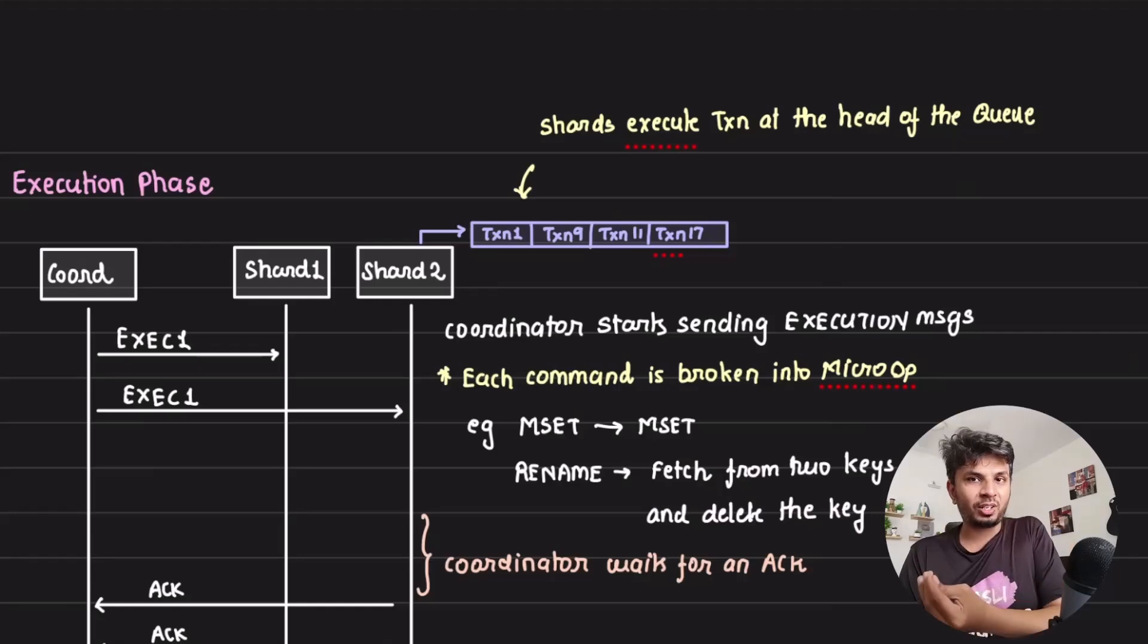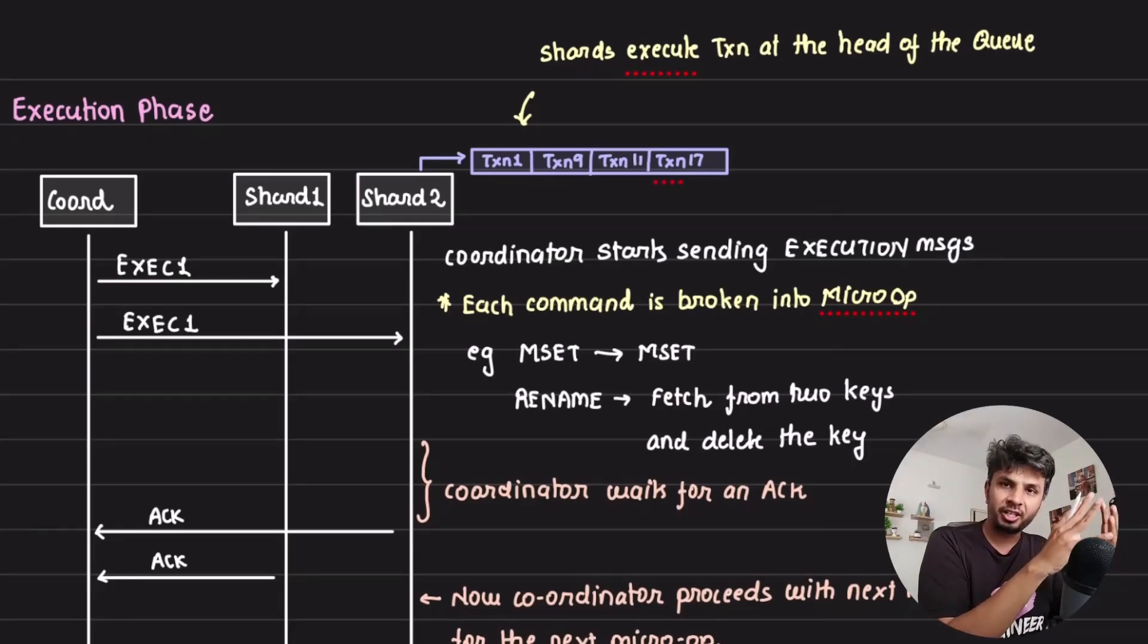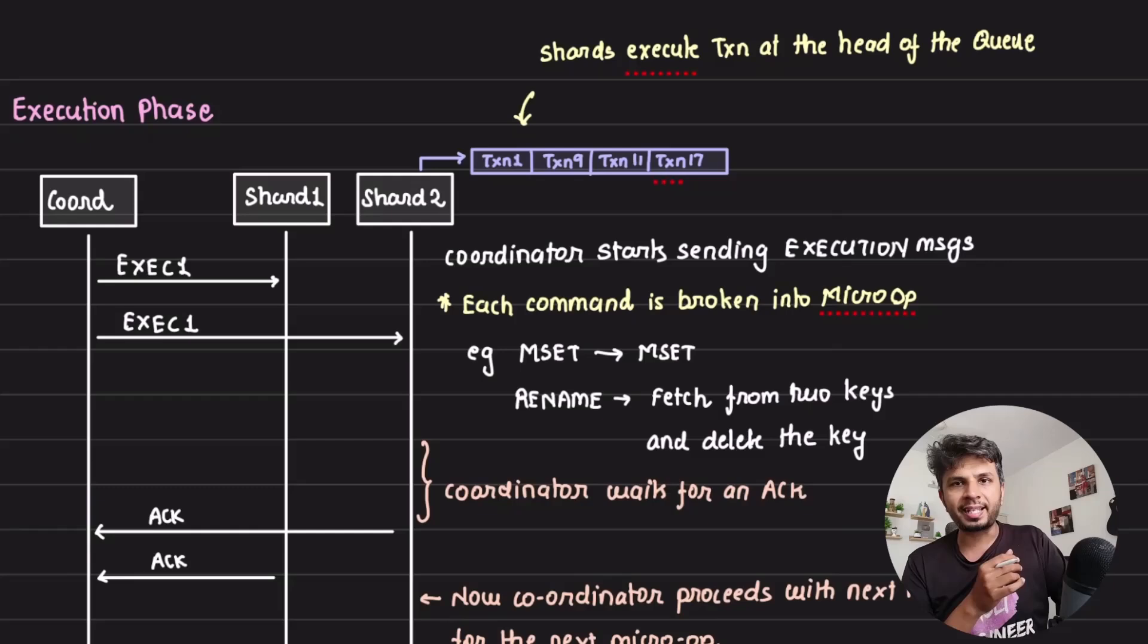What happens in the execution phase? This is where things start to become interesting. When your coordinator receives acknowledgement for its schedule phase from all the shard threads, it sends execution messages. Execution messages like execute this first command, execute the second command. It sends these messages to the corresponding shards. Your coordinator starts sending the message.